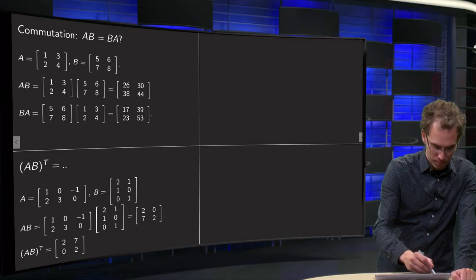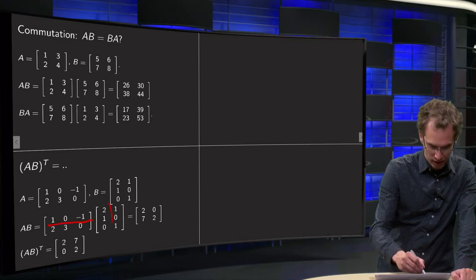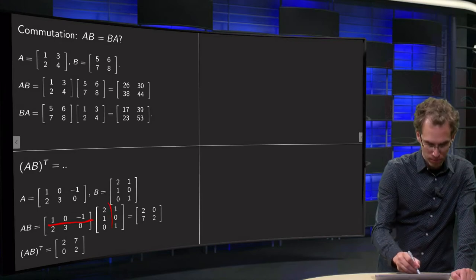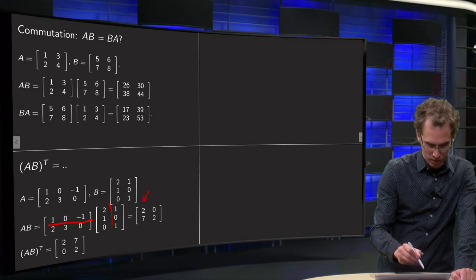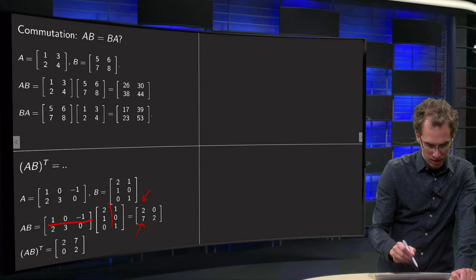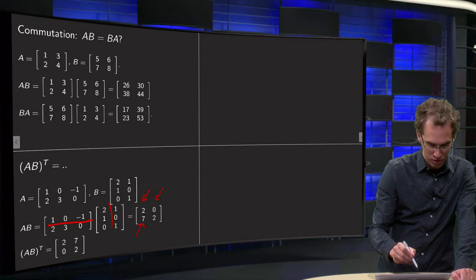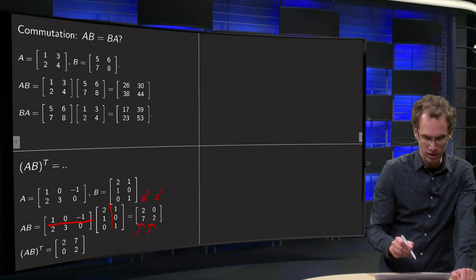First we compute A times B. Again, row-column rule. 2 plus 0 plus 0 equals 2. 4 plus 3 plus 0 equals 7. 1 plus 0 minus 1 equals 0. And 2 plus 0 plus 0 equals 2. There we have A times B.